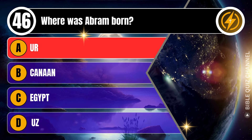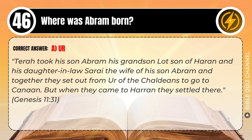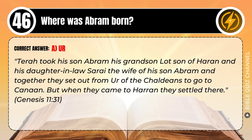Correct answer: A. Ur. Explaining the Bible — Terah took his son Abram, his grandson Lot son of Haran, and his daughter-in-law Sarai, the wife of his son Abram, and together they set out from Ur of the Chaldeans to go to Canaan. But when they came to Haran, they settled there. Genesis, chapter 11, verse 31.